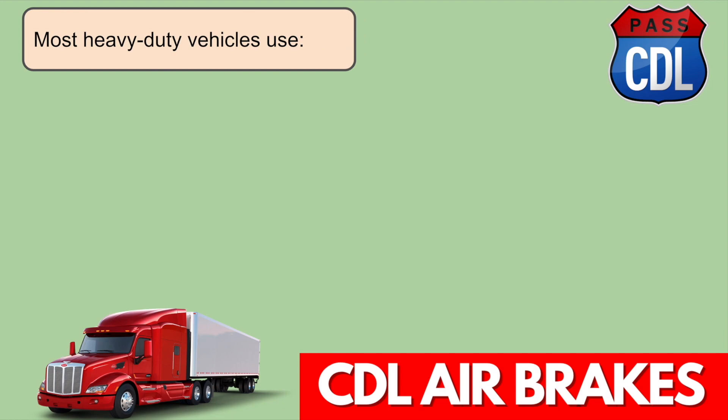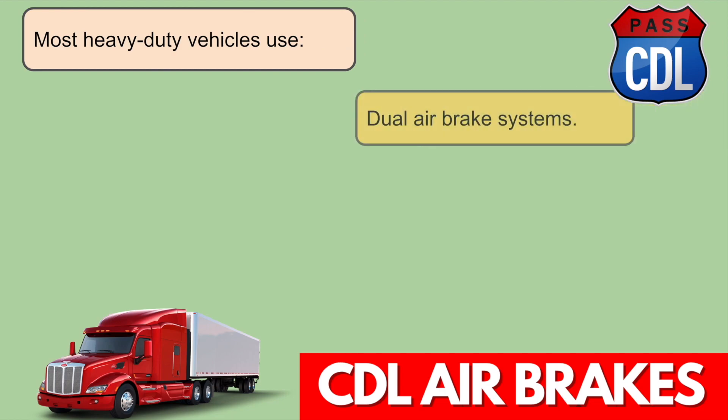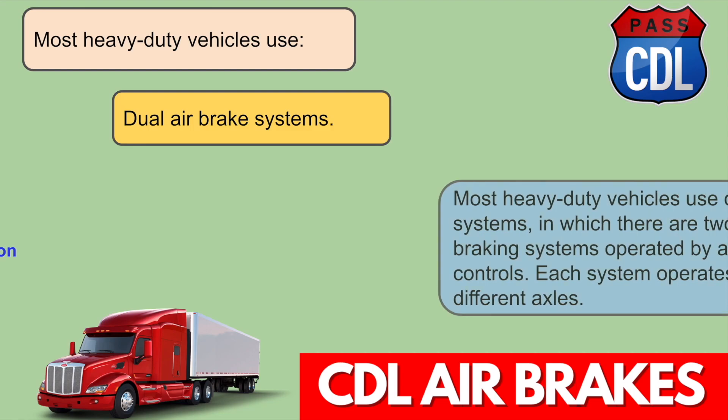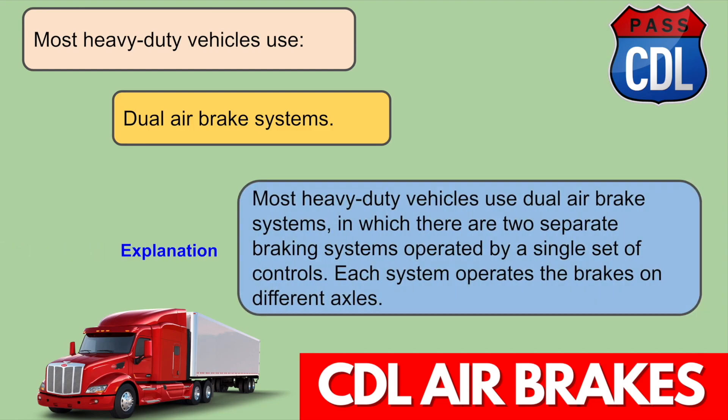Most heavy-duty vehicles use dual air brake systems, in which there are two separate brake systems operated by a single set of controls. Each system operates the brakes on different axles.